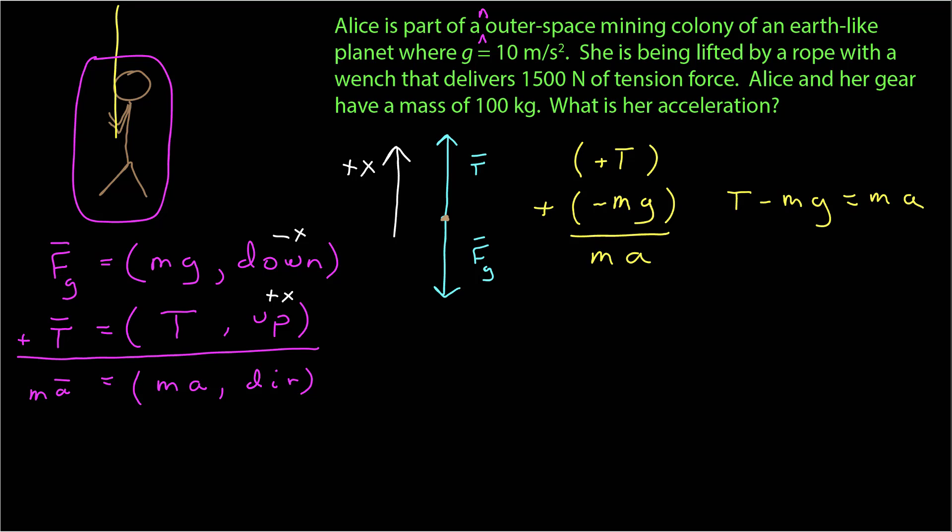Note I don't plug in any numbers until I know I can solve the expression. Here I plug in numbers for all the expressions, and I'm not going to go to my calculator. I'm going to do all the easy math on paper to help eliminate calculator error. 100 times 10 is 1,000. 1,500 minus 1,000 is 500, equal to 100A. Acceleration is equal to 5 meters per second squared.